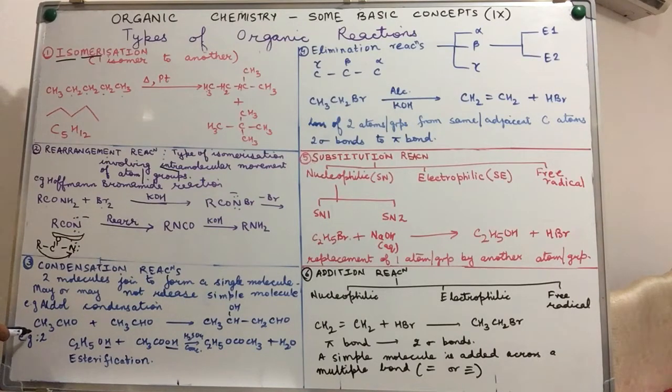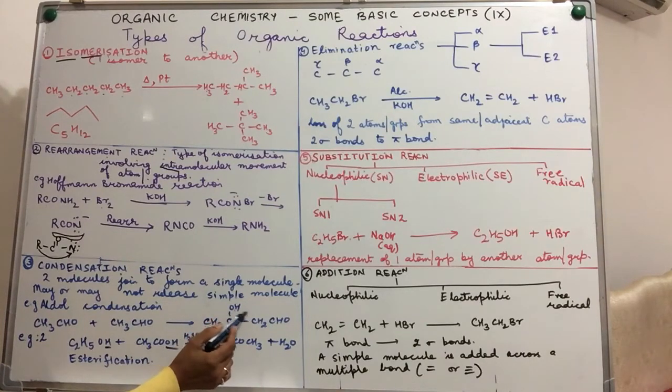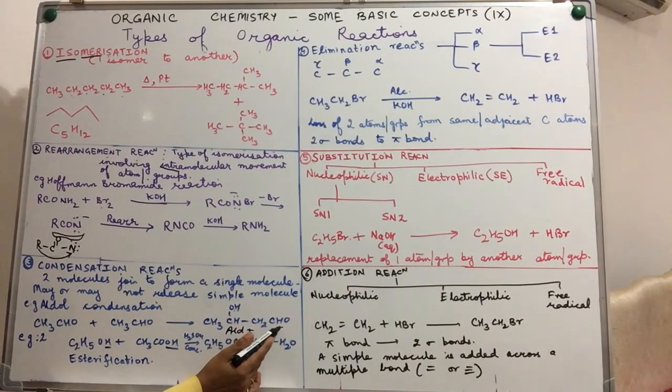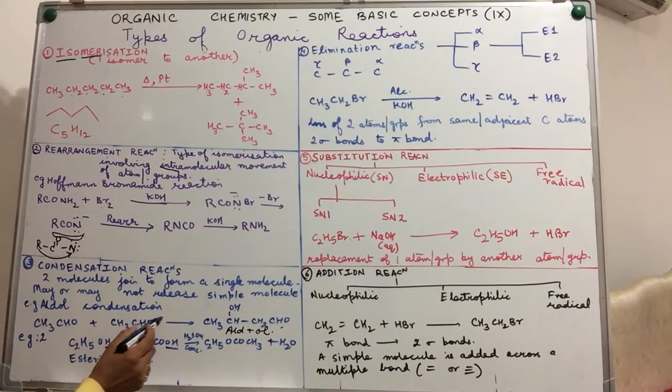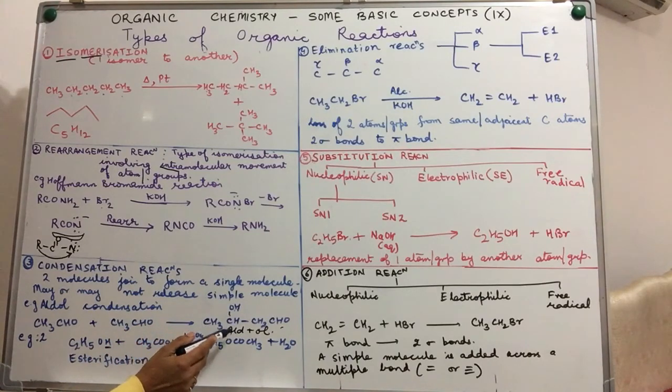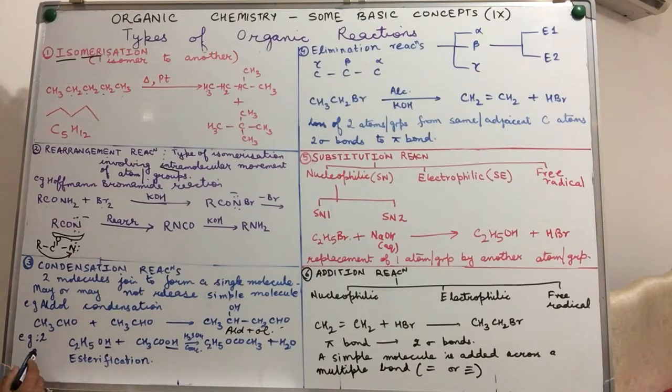Here we have taken both examples. That means, an example of aldol condensation. Aldol comes from the word alcohol and aldehyde. Our resulting product has an aldehyde group and an alcoholic group. So aldol is the name of the product form. Two molecules of acetaldehyde undergo condensation to give you a molecule of aldol. The details of this reaction you shall do when you are doing the topic aldehydes.